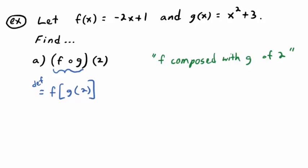Anytime you see the gof notation, replace it with g of f. So now work it from the inside out. g of 2 is a number. Think about the function g — here's the formula for the function g. What would g of 2 be equal to?